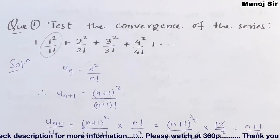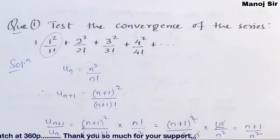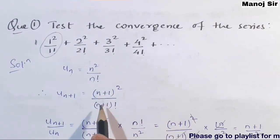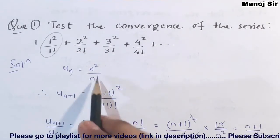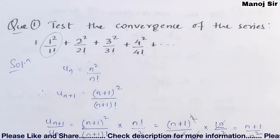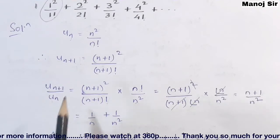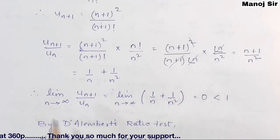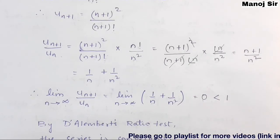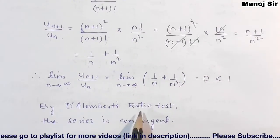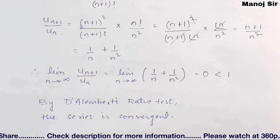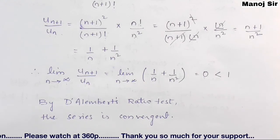The key steps are: first, find UN, the nth term of the series — here it is n²/n!. Then find UN+1 by replacing n with n+1. Then divide to get UN+1/UN. Then find the limit n→∞ of UN+1/UN. From that value, by D'Alembert's ratio test, we decide whether the series is convergent, divergent, or whether the test fails. In the next two videos — 15 and 16 — we will deal with questions where the test fails.